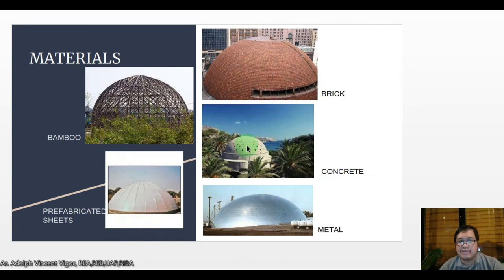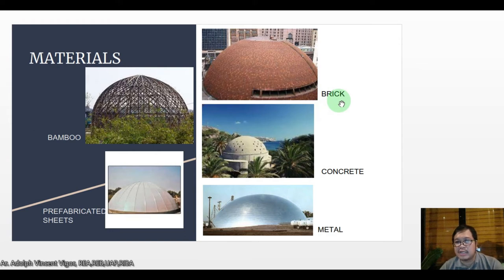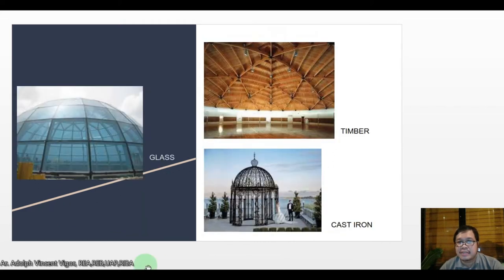The materials for domes: domes are made of brick, concrete, metal, prefabricated sheets, or even bamboo. They can also be made of timber, cast iron, or glass.